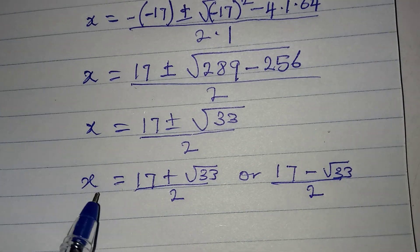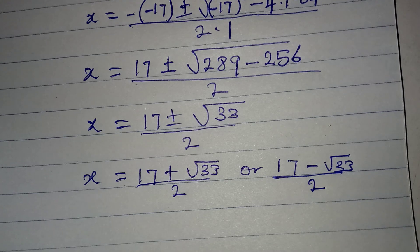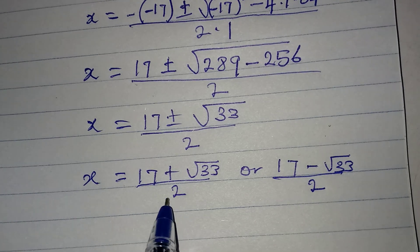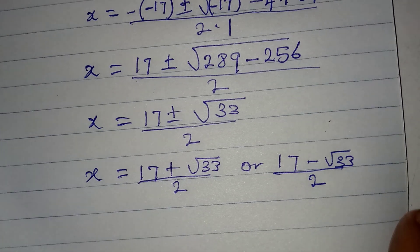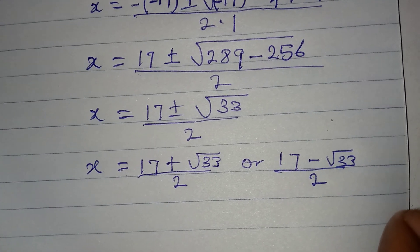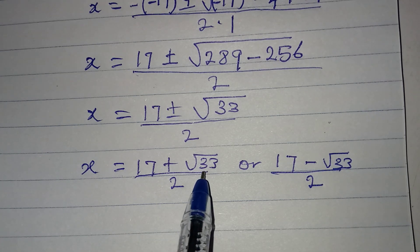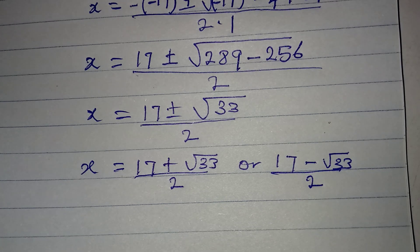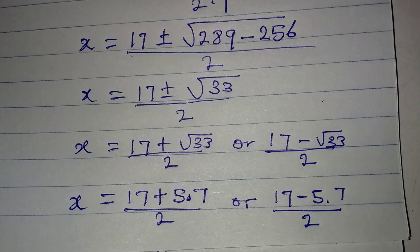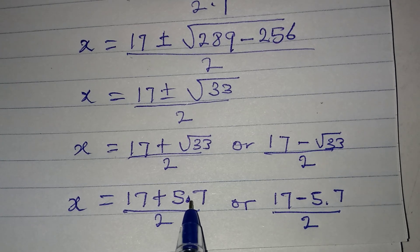So these are the two solutions that will satisfy the equation. So you can call this x1, and then call this x2. And then if you want to get decimal, you can still proceed and get the value of square root of 33 from a calculator.